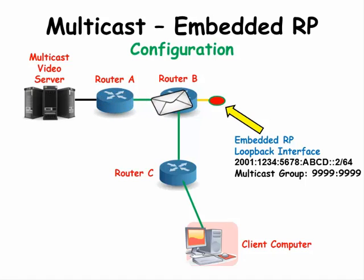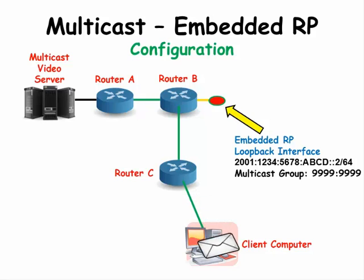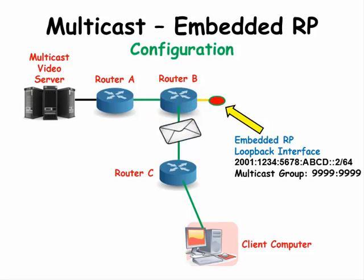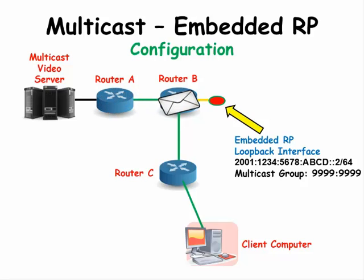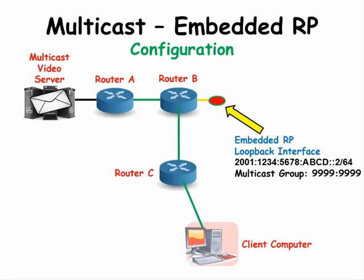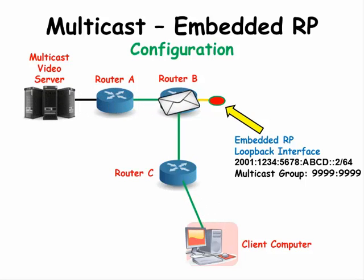Here's the problem. A 128-bit RP address can't be embedded in a 128-bit group address and still leave space for the group address identity without some type of compression. Let's look at the steps for creating an embedded Rendezvous Point IP address for multicasting.